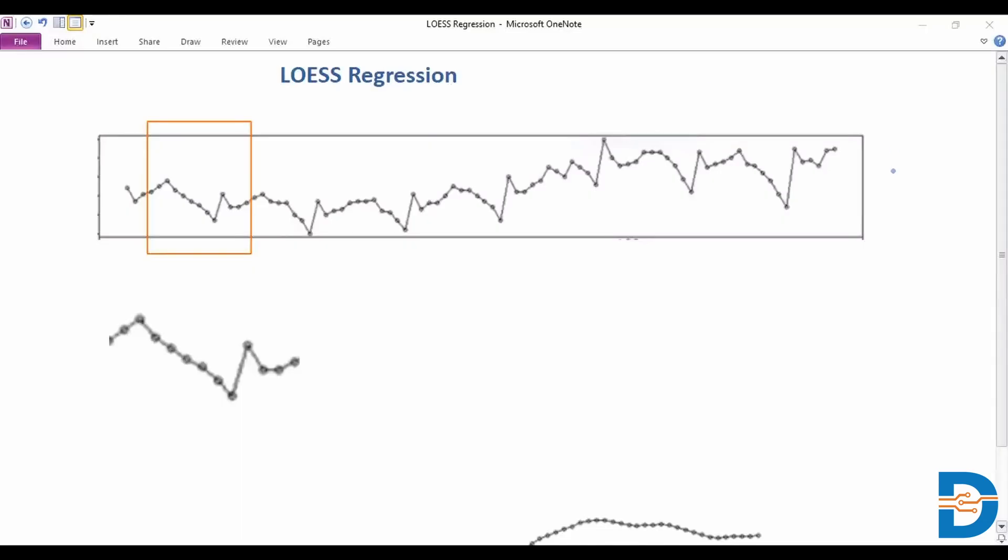Hello and welcome to this video on machine learning where we'll be taking a look at LOESS regression. LOESS is also known as LOWESS. They're essentially the same and we're really talking about locally estimated scatterplot smoothing.